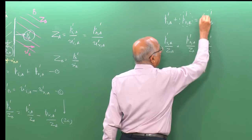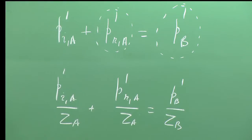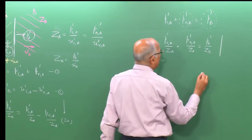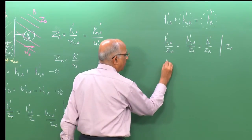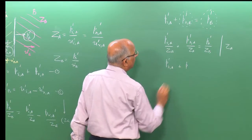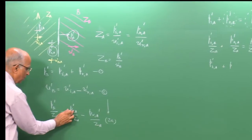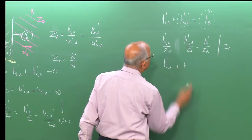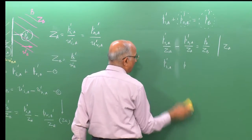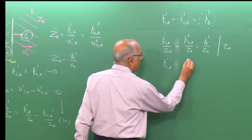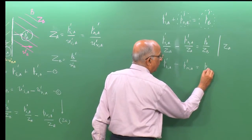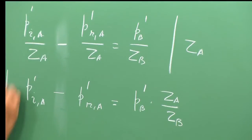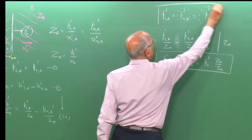I notice the first equation has p prime plus p prime for incident and reflected. So I multiply the second equation by Z_a, giving: p_ia prime − p_ra prime = p_b prime × (Z_a / Z_b). This is equation 2 in its modified form.